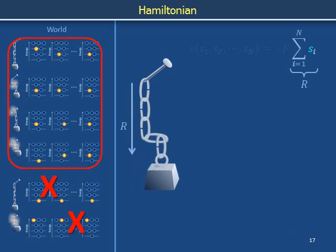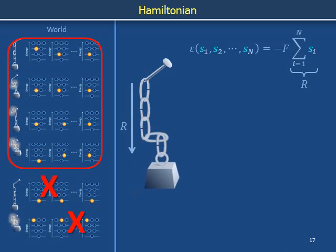To represent the contribution of the gravitational potential energy of the weight to the energy of the system, we say that the energy of the chain, squiggly E, is negatively proportional to the displacement capital R. The proportionality coefficient capital F parametrizes how much the system's energy varies with the height of the weight. The coefficient F is called the force. There are no other terms in the energy function — for example, no terms involving whether two consecutive links point parallel or anti-parallel. There are no so-called interactions between links. In this sense, this is an ideal chain.